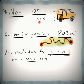We have a minivan that uses 10.5 liters per hundred kilometers. We're planning to go visit grandma and she lives 803 miles from our house. The question is how much does the gas cost for a round trip?